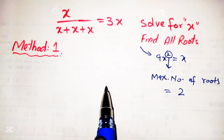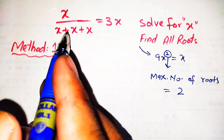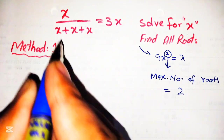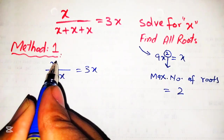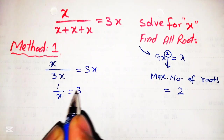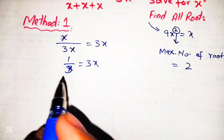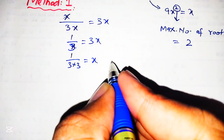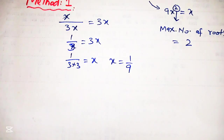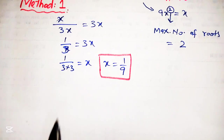It depends on the method we use to solve how many roots come out. In method 1, if we solve it directly, we can rewrite it as x over x plus x plus x is equal to 3x. From this, x cancels out and we get 1 over 3 is equal to 3x. After taking 3 to the left-hand side, we get 1 over 3 multiplied by 3 is equal to x. So we find x is equal to 1 over 9, which is the final solution by using method number 1. But we can see that there is only one root found by this method.